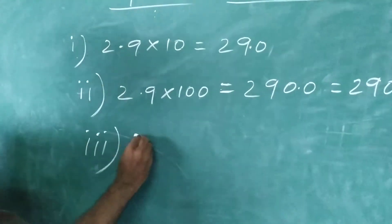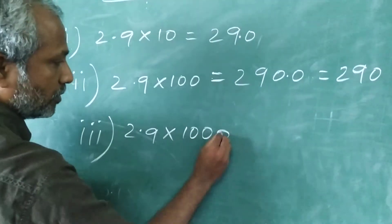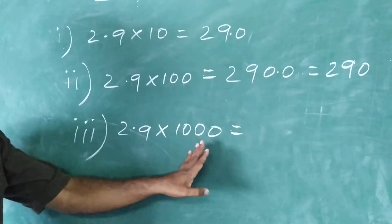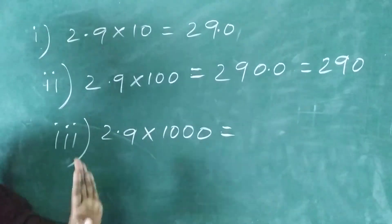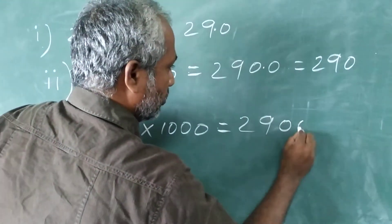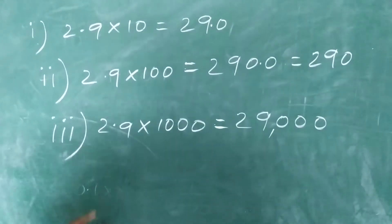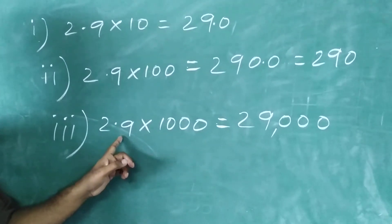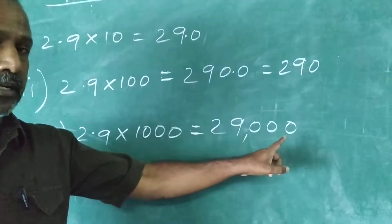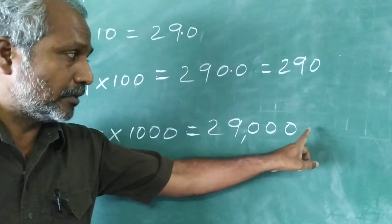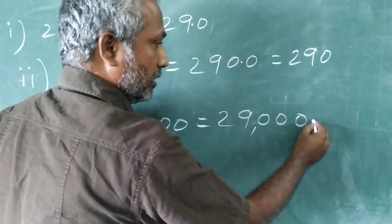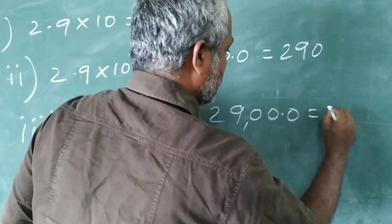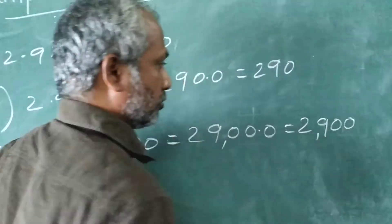The same value, I am going to multiply with 1,000. First, you multiply directly: 2.9 into 1,000 means we multiply 29 into 1,000, which gives 29,000. But among those two values, one is a decimal with only one decimal place. So in the result, you take the decimal from right to left one place, and the answer will be 2,900.